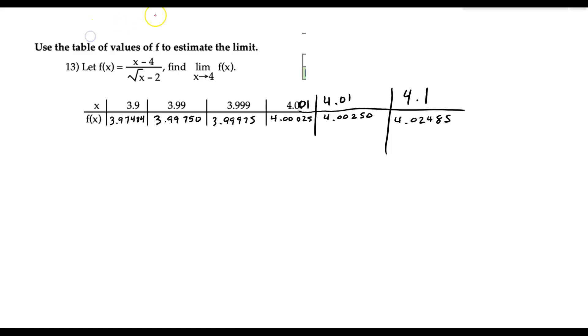We're going to take a look at another example here. Use the table of values of f to estimate the limit of f(x) where f(x) is (x-4) over the square root of (x-2) as x approaches 4.